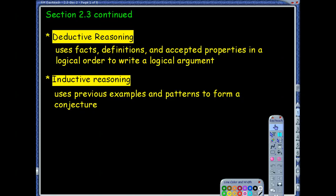We're continuing section 2.3, which was about deductive reasoning, and today we're actually going to talk about deductive reasoning. There's two main types of reasoning: deductive reasoning and inductive reasoning, and I want to make sure that we understand the difference between these.